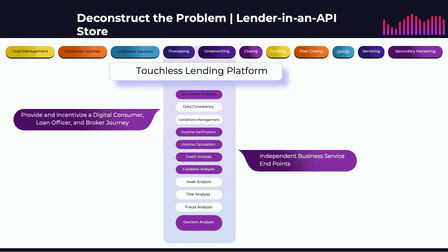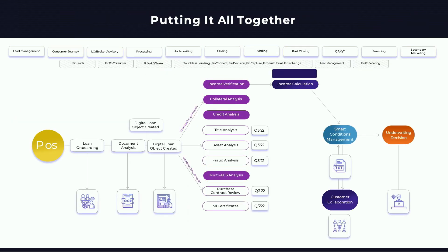On processing and underwriting: the moment the loan has been submitted, we will automatically evaluate the loan file to ensure the required documents are available, automatically perform OCR and data extraction, identify the loan program and the investor of choice, and then identify all the rules and requirements to satisfy the investor requirements. If it is an agency loan, run DU/LP. If it is a non-portfolio or non-QM product, run investor-specific guidelines through an automated AUS underwriting system.